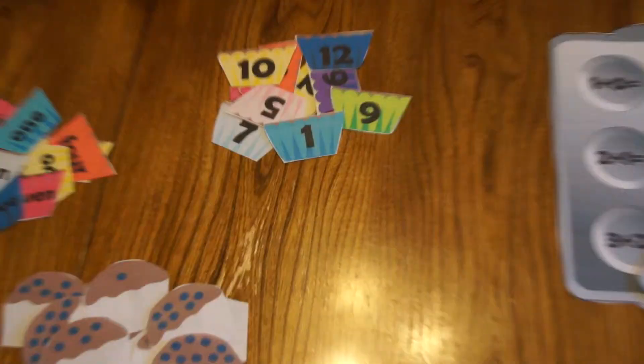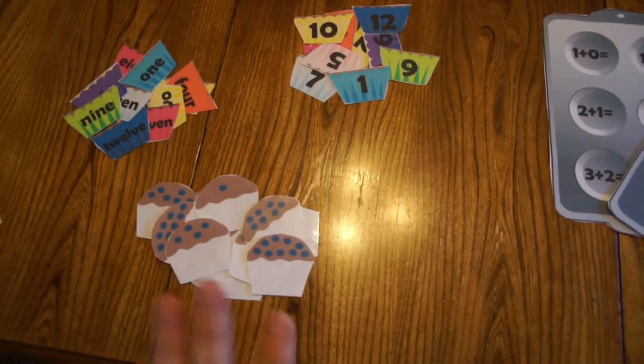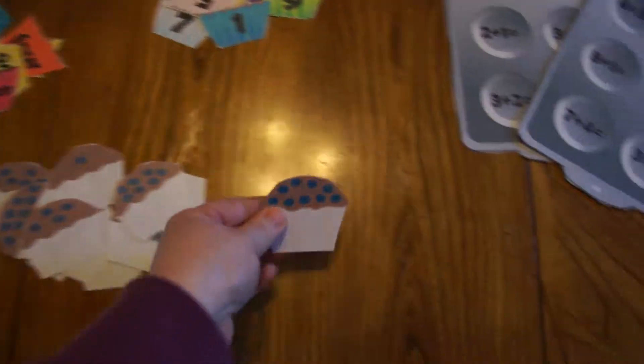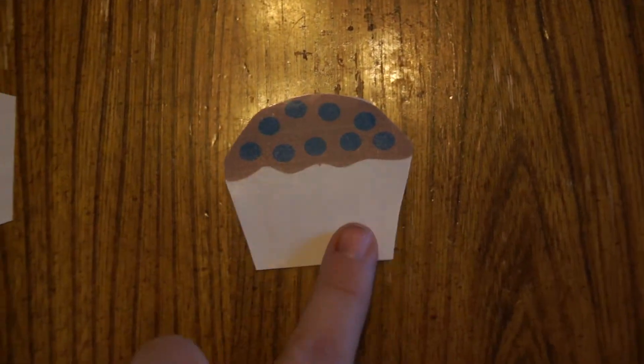So this activity is adaptable from toddler preschool to kindergarten. Here's what you do. You're going to take a muffin, and you're going to count. This one has nine blueberries.